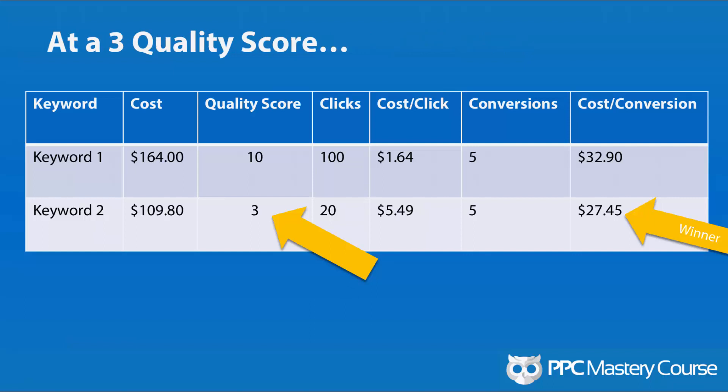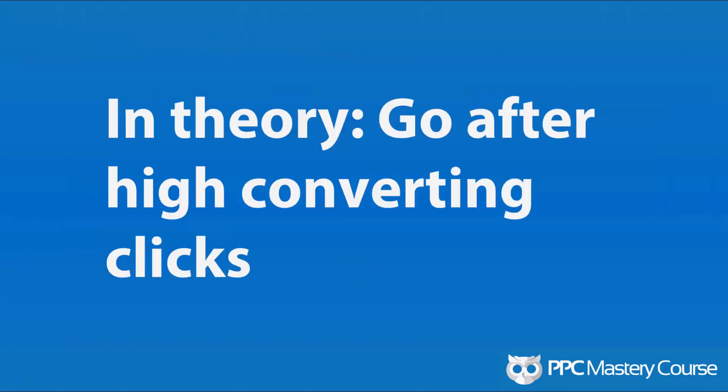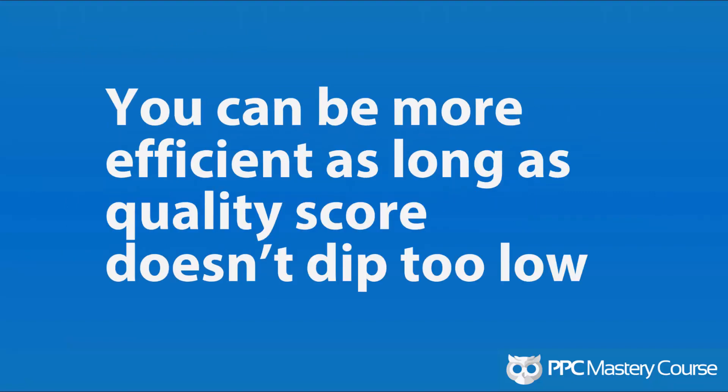At a quality score of three, believe it or not, you're still more profitable employing this method — assuming you're eliminating 80% of your clicks through this copywriting tactic. It's debatable whether you can eliminate 80% just by putting the price in the ad, but this extreme case could still be valuable even down to a quality score of three. It actually takes until quality score two — the bottom of the barrel — for the cost per conversion to go up. So in theory, you could go after high-converting clicks and make your AdWords account much more efficient overnight, as long as your quality score doesn't dip too low.